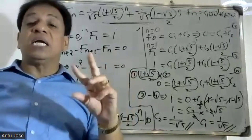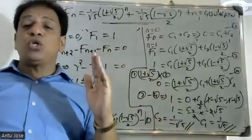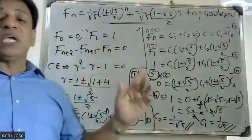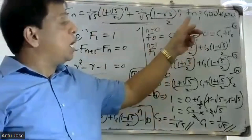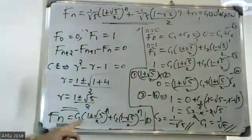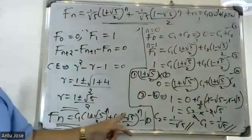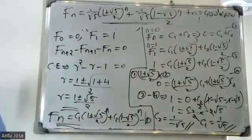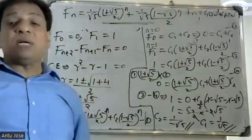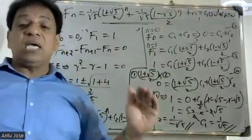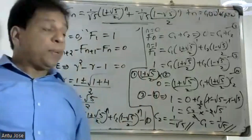In summary, since the roots are distinct and real, the second order recurrence has general solution: f(n) equals C1 into r1 raised to n plus C2 into r2 raised to n. Substituting r1 equals one plus root five by two and r2 equals one minus root five by two, with constants C1 and C2 determined by the boundary conditions.